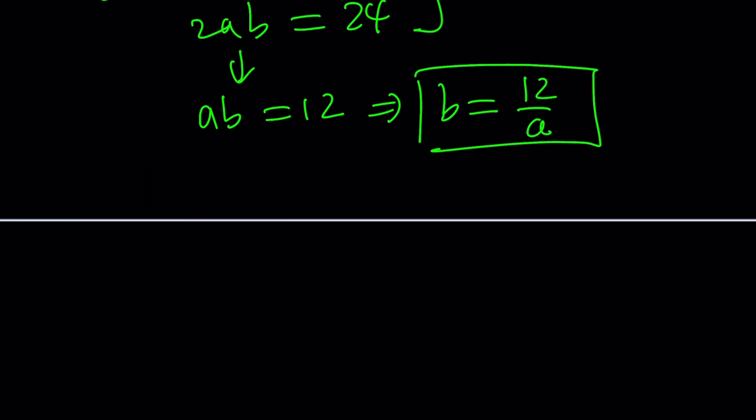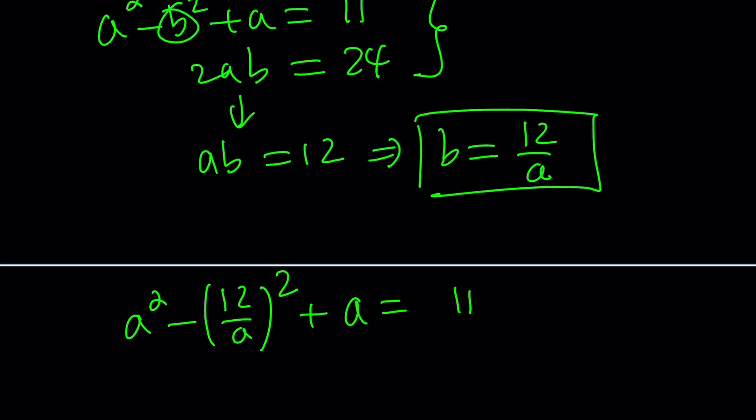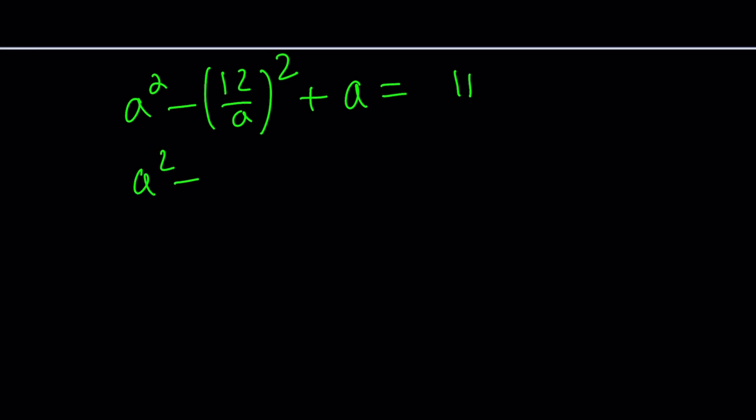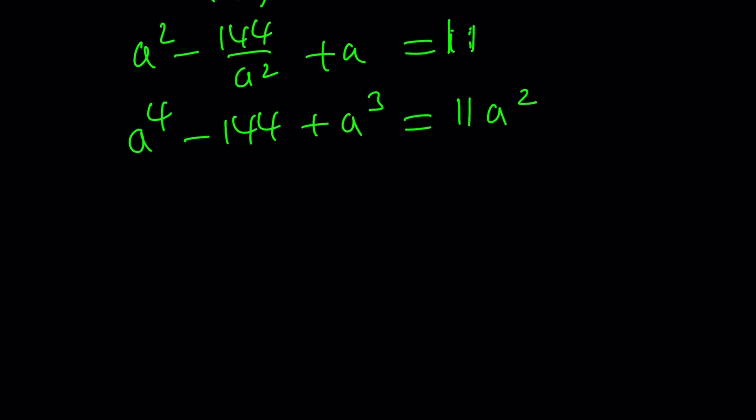This is something we can substitute here. So now we have a squared minus b squared which is 144 over a squared, plus a equals 11. So this equation needs to be solved. Can we solve it? Let's give it a try. This will be 144 over a squared. A quartic is coming up, scary, right? So now we're going to multiply both sides by a squared: a to the fourth minus 144 plus a cubed equals 11a squared. And if you put everything on the same side: a to the fourth power plus a cubed minus 11a squared minus 144 equals zero.